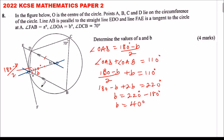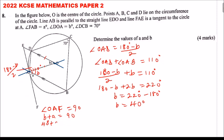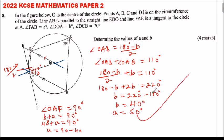We established that angle OAF equals 90 degrees. This angle is made up of b plus a, so b plus a equals 90 degrees. Since b equals 40 degrees: 40 plus a equals 90, therefore a equals 50 degrees.